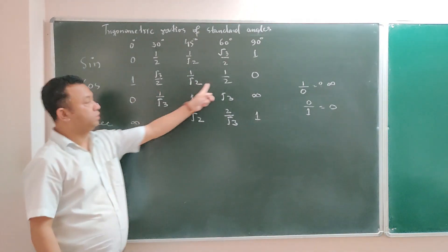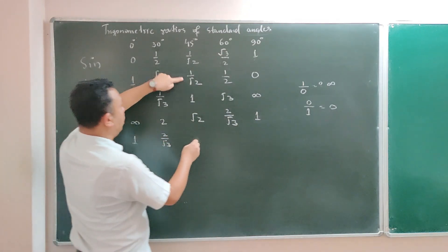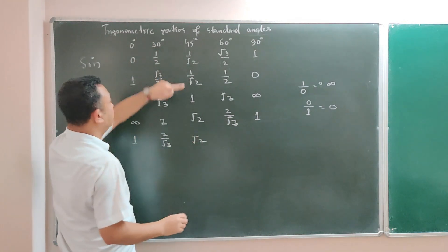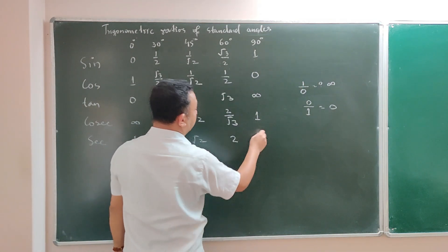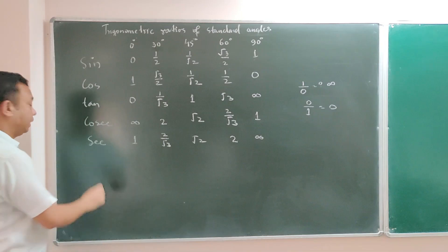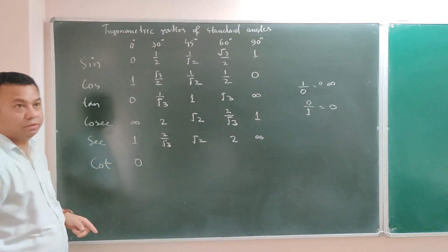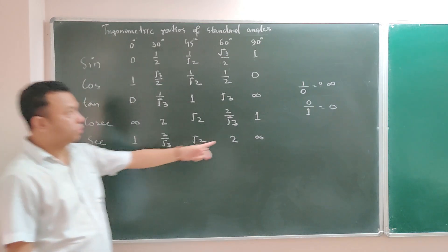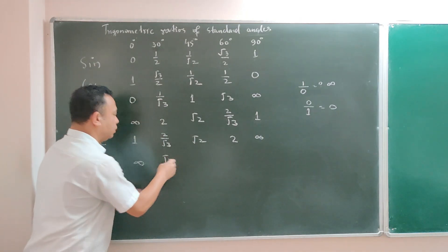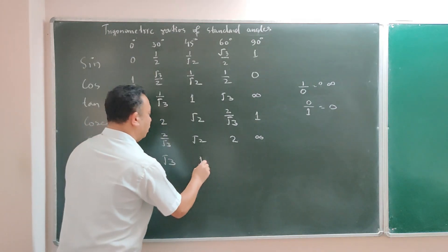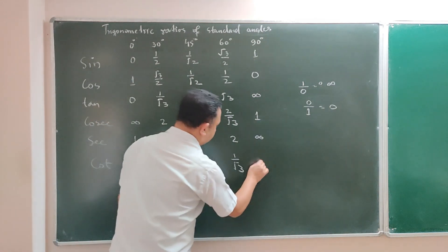Sec is the reciprocal of cos. So cos values are: 1 reciprocal is 1, √3/2 reciprocal is 2/√3, 1/√2 reciprocal is √2, 1/2 becomes 2, and 0 reciprocal is undefined. Finally, cot is the reciprocal of tan. Tan 0° is 0, so reciprocal is undefined. 1/√3 becomes √3. 1 reciprocal is 1. √3 reciprocal is 1/√3. And reciprocal of undefined is 0.